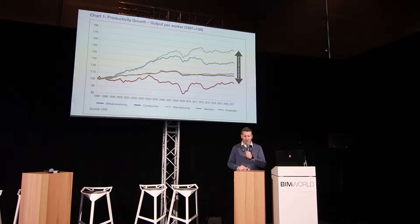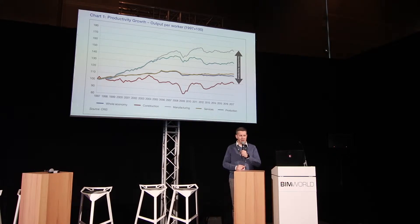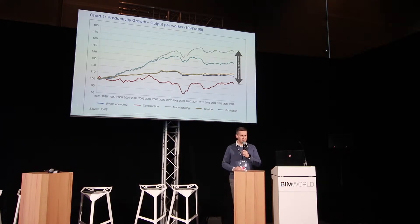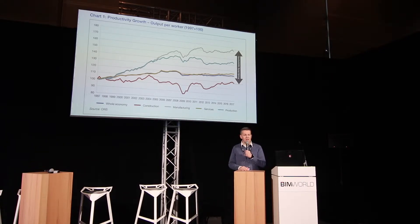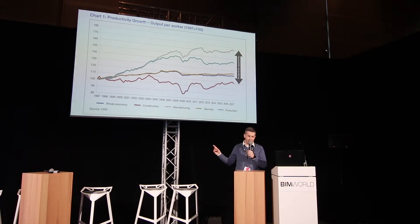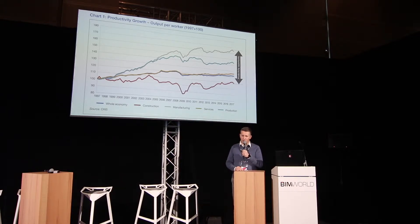I guess many of you know this chart. This is from the Office of National Statistics from the UK. They do lots of useful research and publications about data, such as this one on this slide. This shows the productivity of different sectors compared to each other over a 20-year span, from 1997 to 2017. Unfortunately, our sector — the AEC sector — is at the very bottom, indicated with red. It seems like we didn't advance much in the past two decades.